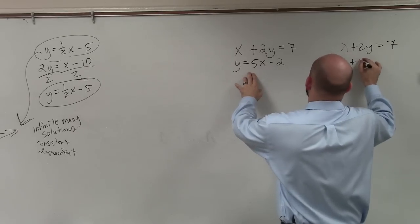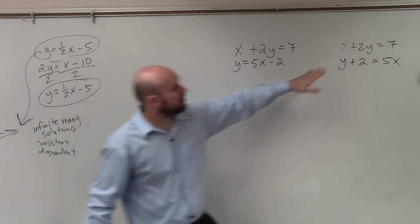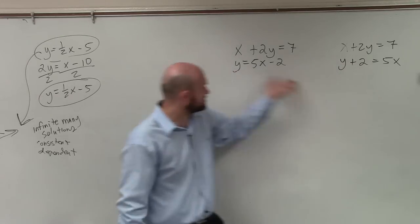Let's pretend the equation looks like this. Let's just pretend the y was on the same side. What you'd want to do, your first step, would be to solve for y, which would be to subtract the 2. So then you have it like this.